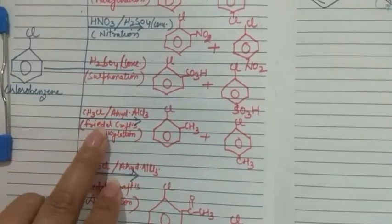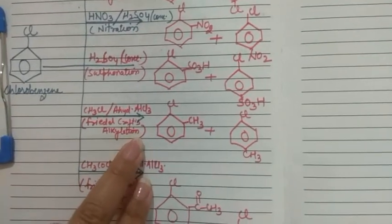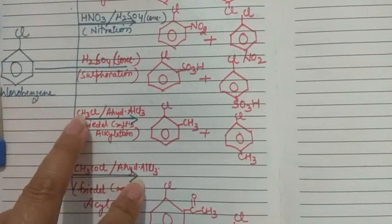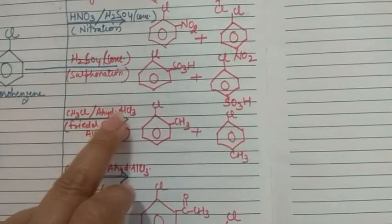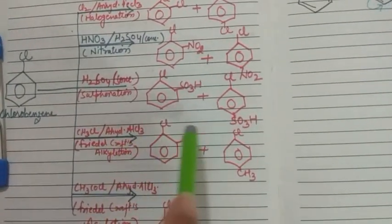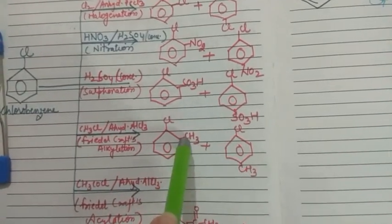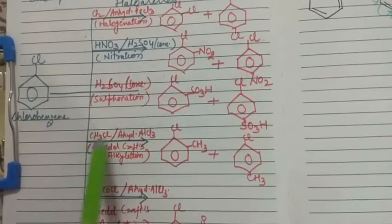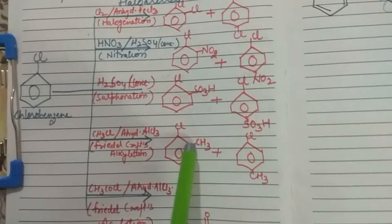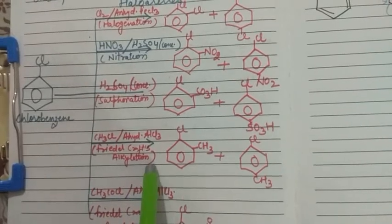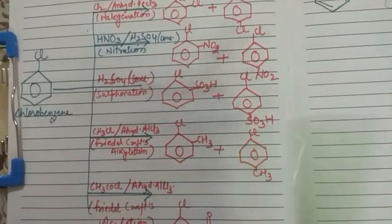The next reaction is Friedel-Crafts alkylation reaction. In Friedel-Crafts alkylation we use alkyl halide. Here we have used methyl chloride in the presence of anhydrous AlCl₃. In this reaction, the alkyl group will attack at the ortho position and para position. We have used methyl chloride, so the alkyl group is CH₃, and CH₃ will attack at the ortho and para position.